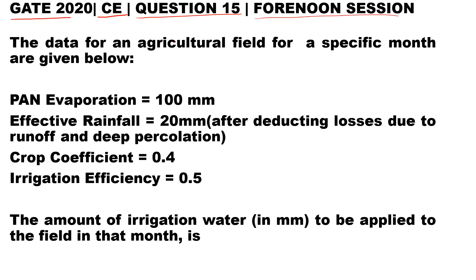The question states that the data for an agricultural field for a specific month are given below. Pan evaporation equals 100 mm. Effective rainfall equals 20 mm, that is after deducting losses due to runoff and deep percolation. Crop coefficient 0.4. Irrigation efficiency is 0.5.